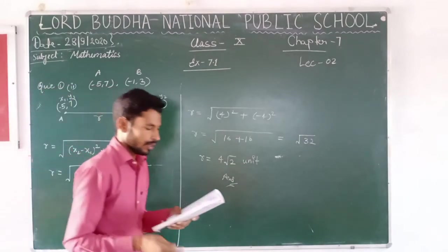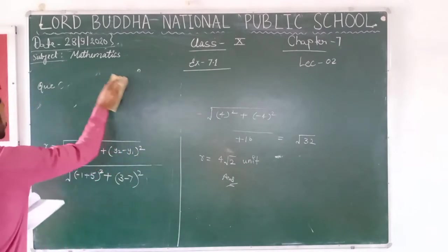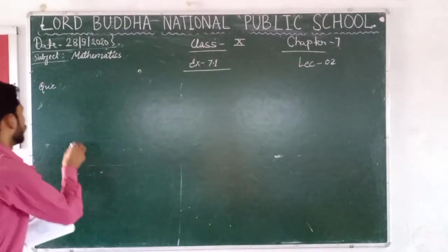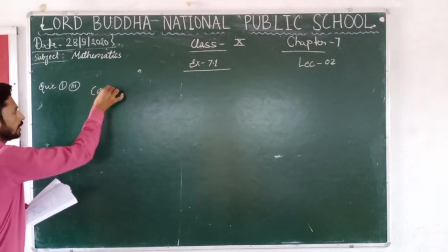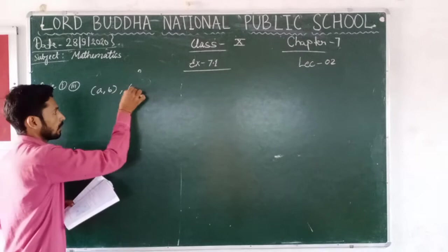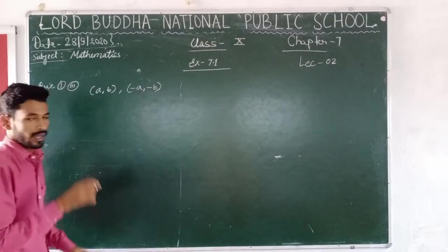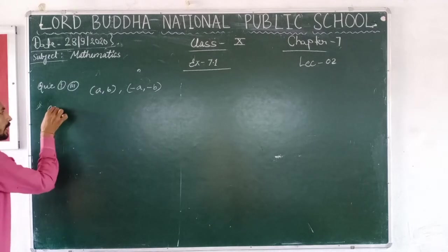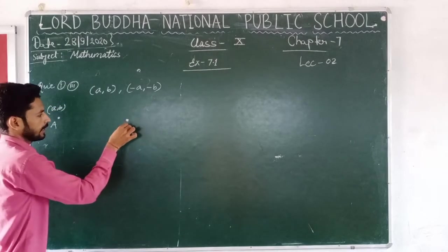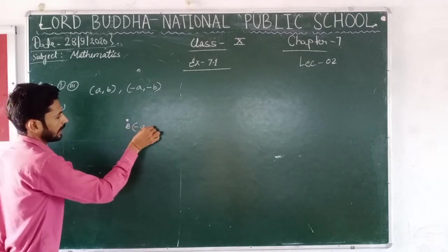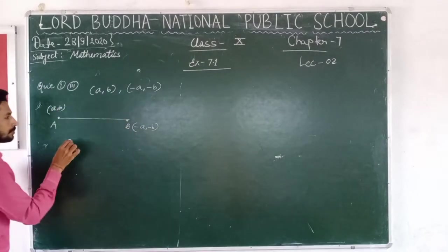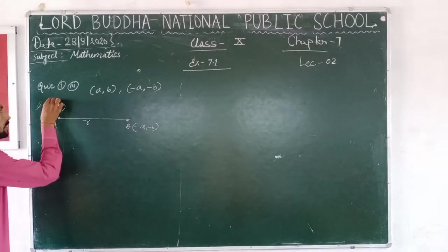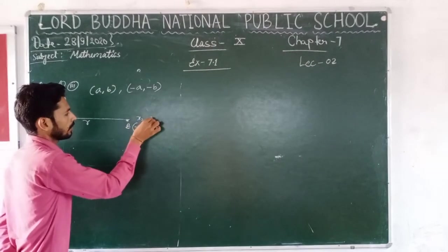Now, question number 1 part 3: the first coordinate of point A is a comma b, and the second coordinate — point B — is minus a comma minus b. We have to find the distance between these points. Suppose point A has coordinates a comma b, and point B has coordinates minus a comma minus b. Join these points and this distance is r. Now, suppose x1 and y1 correspond to point A, and x2 and y2 correspond to point B.